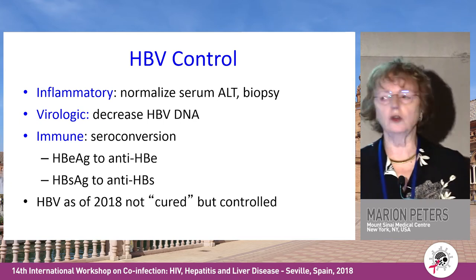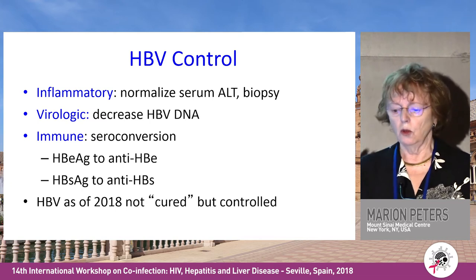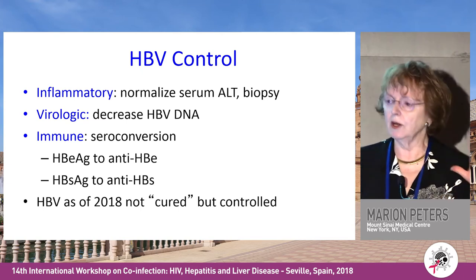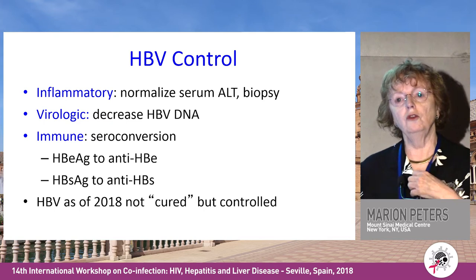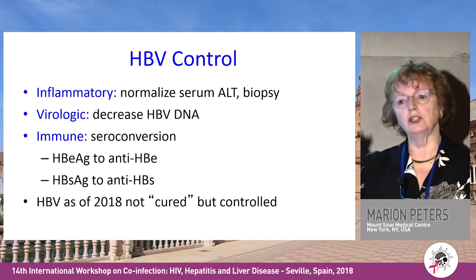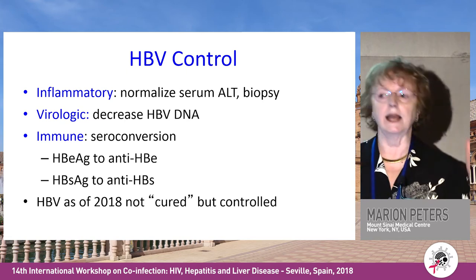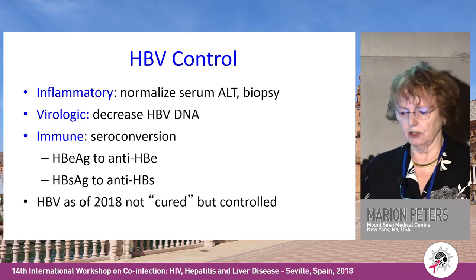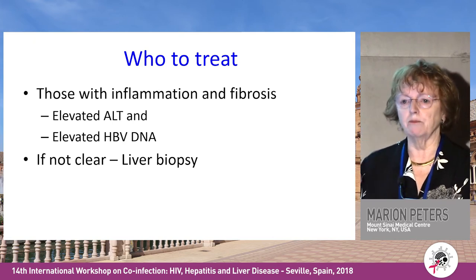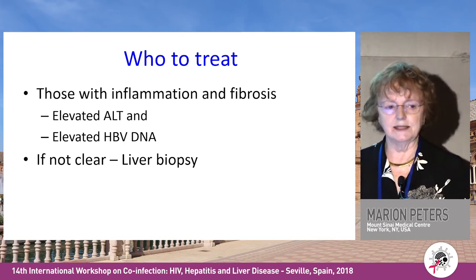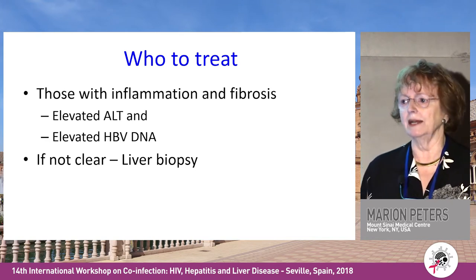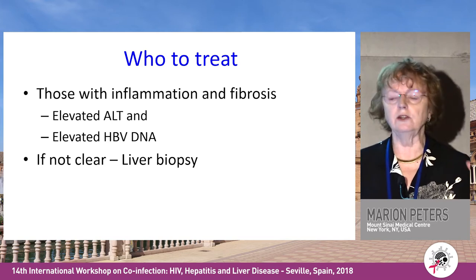You can have inflammatory control where you normalize the ALT and have a normal liver biopsy. You can have virologic control, which is a decrease in HBV DNA. Or you can have immunologic control — seroconversion from E antigen to E antibody, or from surface antigen to surface antibody. We cannot as yet cure it. You treat those who have inflammation and fibrosis, elevated ALT, elevated HBV DNA. If it's not clear whether they have chronic hepatitis, you need to do a biopsy, which you don't need to do very often.